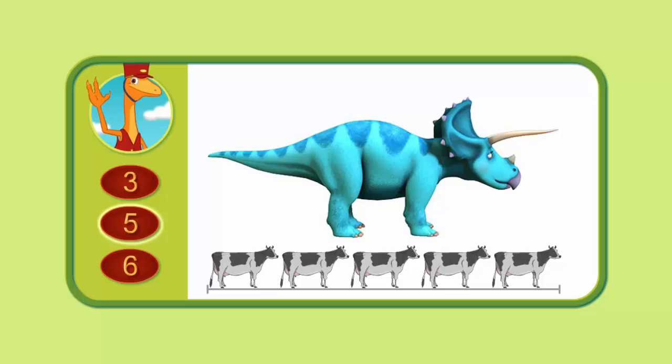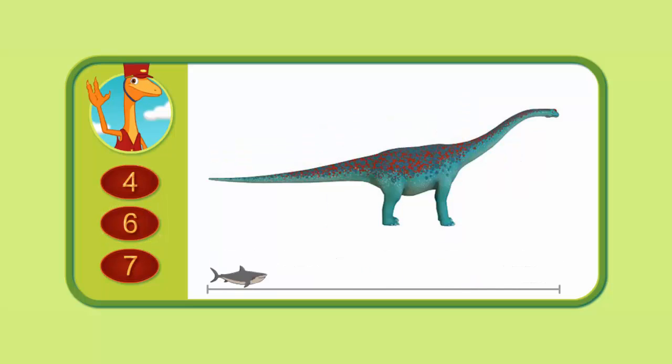That's exactly what you guessed. Let's try another. About how many great white sharks long is this Argentinosaurus? Four, six, or seven?